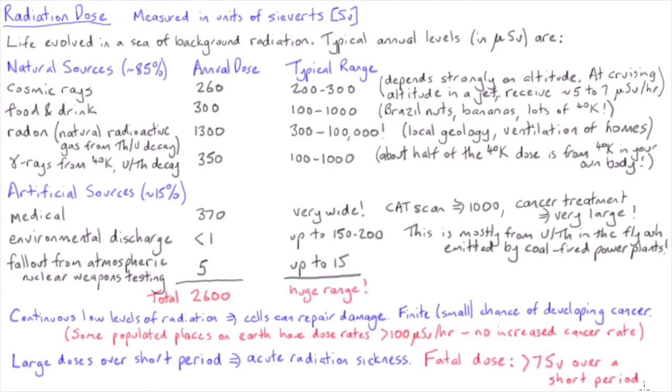Note that there is a very, very large difference between a fast and fatal dose of 7 sieverts compared to the average background radiation dose received of only 2600 microsieverts spread across the entire year.